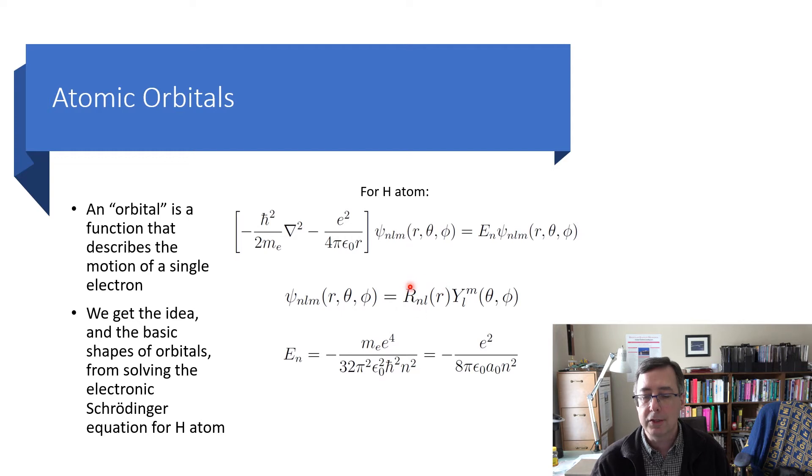And the wave function is just a function of r, the radius, with two subscripts, n and l, times Y_lm of theta and phi. These are the so-called spherical harmonic functions, and they're complex functions. And so you have an angular part times a radial part.